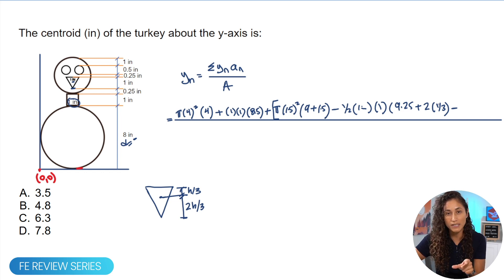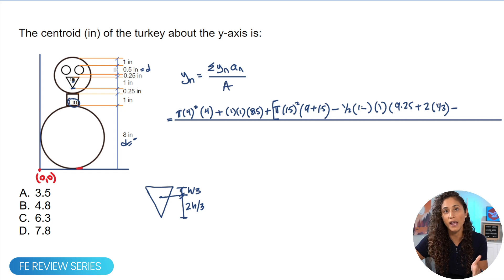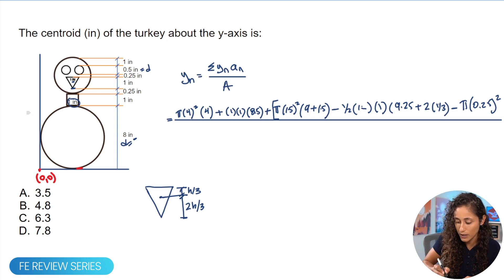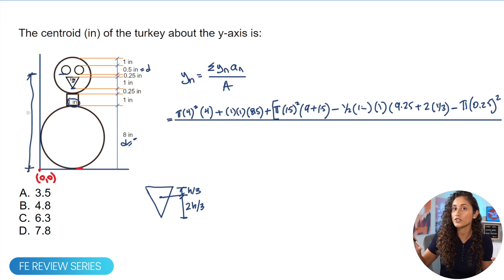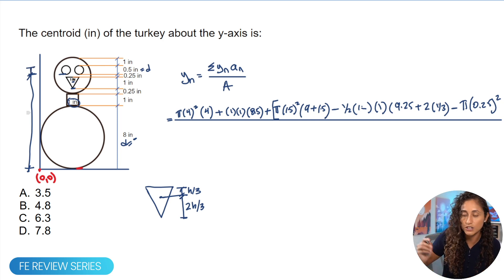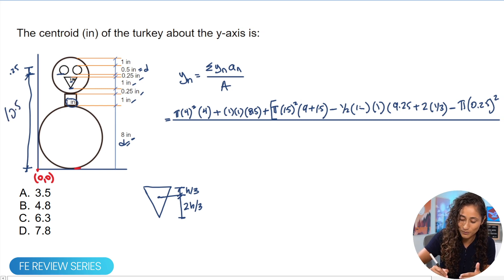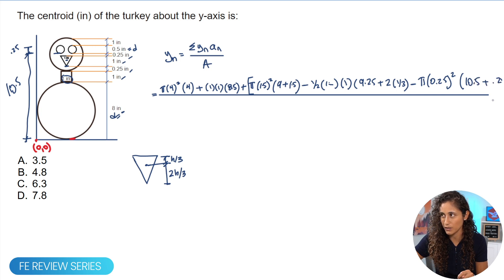Subtracting the two small circles: area = π × 0.25² (radius = 0.5/2 = 0.25). For ȳ_n, we reference back to the origin. The center of each small circle is at distance 10.5 from the origin (8 + 1 + 0.25 + 1 + 0.25 = 10.5), so ȳ_n = 10.5 + 0.25.